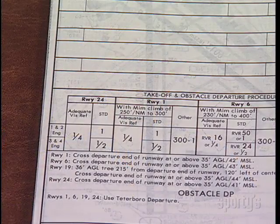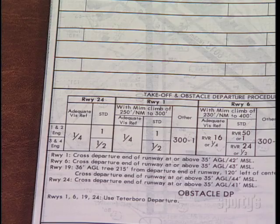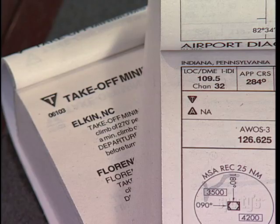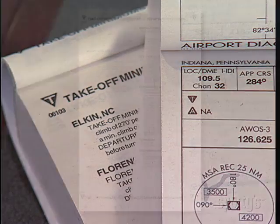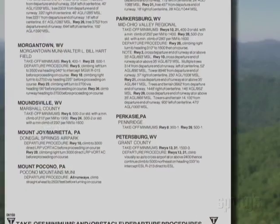The departure procedure for this airport ensures that you're not going to launch from here in really scuzzy weather. The departure procedure is shown on a Jeppesen chart on the page with the airport diagram, and in the front of the book in government charts with an alert that it's there on the approach chart.